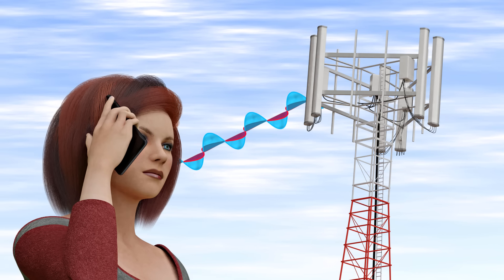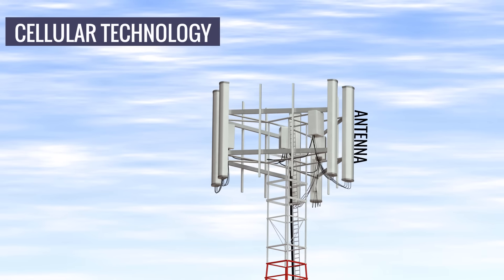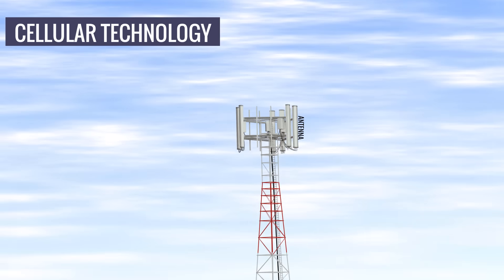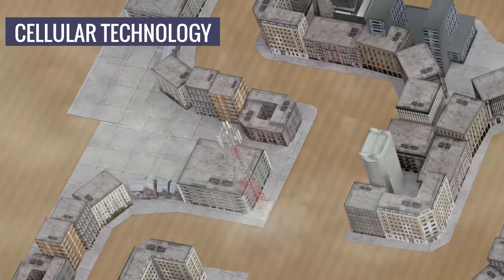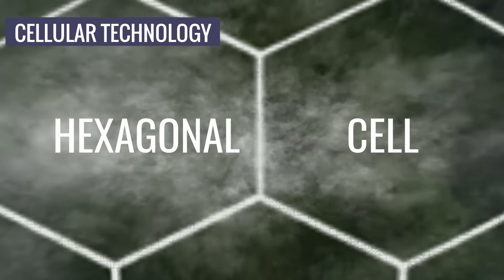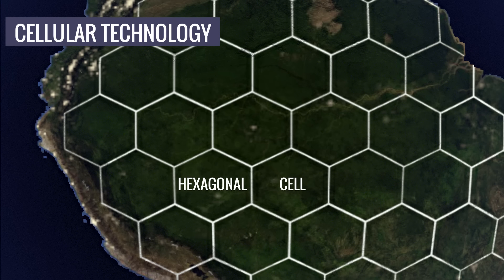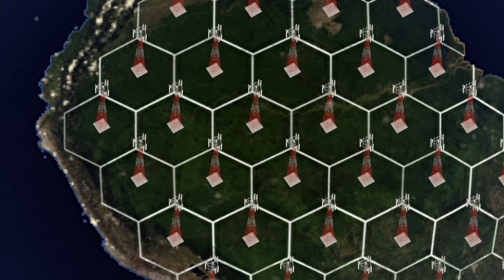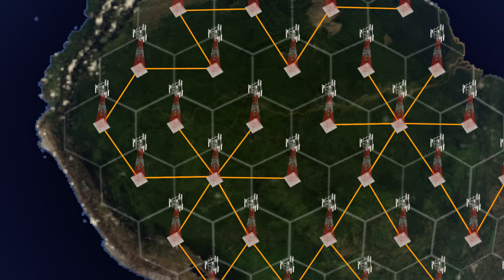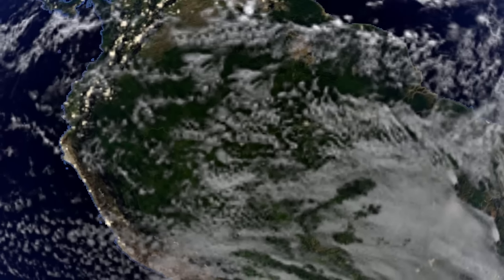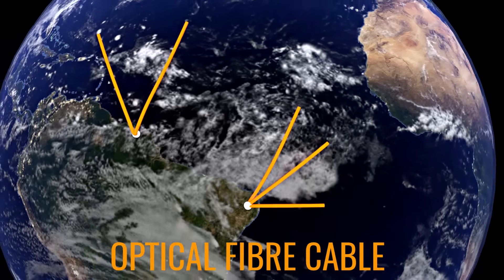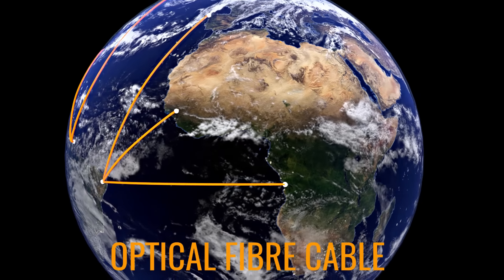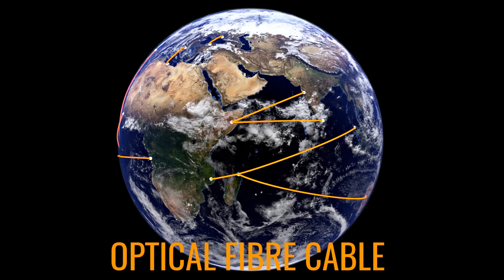To overcome these issues, cell towers were introduced using the concept of cellular technology. In cellular technology, a geographic area is divided into hexagonal cells, with each cell having its own tower and frequency slot. Generally, these cell towers are connected through wires, or more specifically, optical fiber cables. These optical fiber cables are laid under the ground or the ocean to provide national or international connectivity.